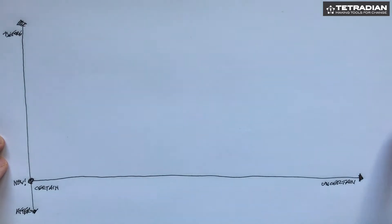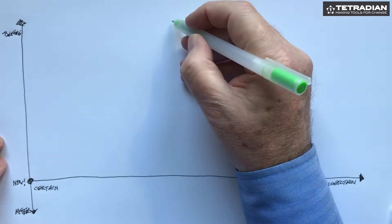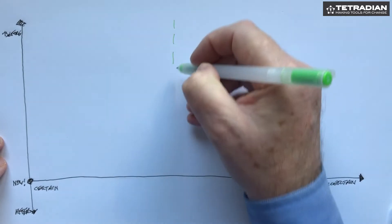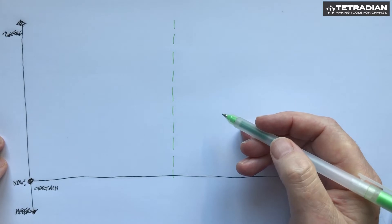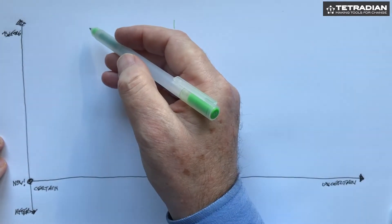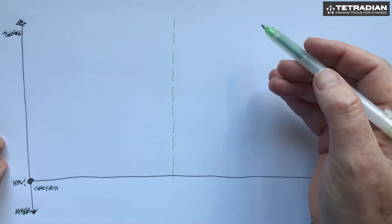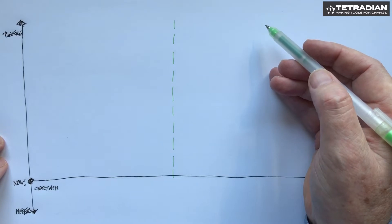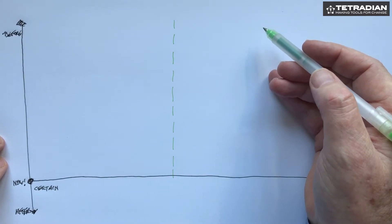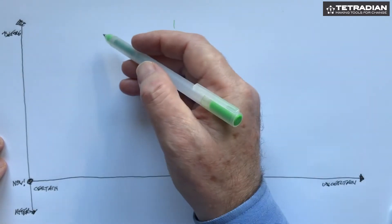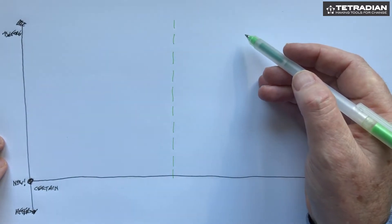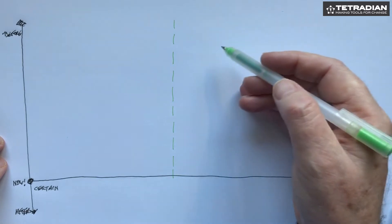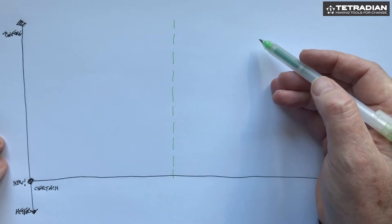In previous videos we've talked about a real boundary which we might call the inverse Einstein boundary. If we do the same thing we'll get the same result, if we do different things we can get the same result, or if we do the same things we may get different results, or we may need to do different things to get the same effective result.